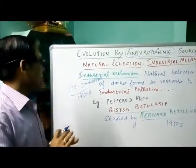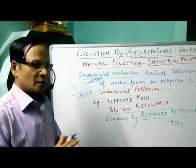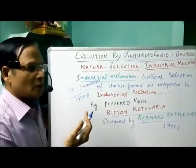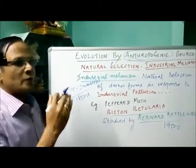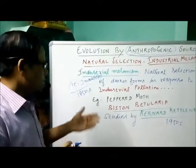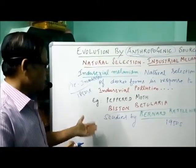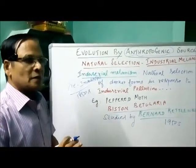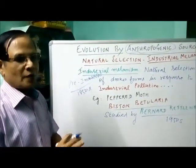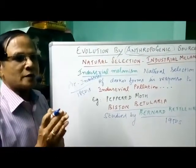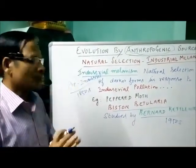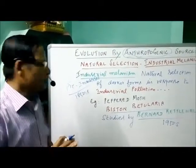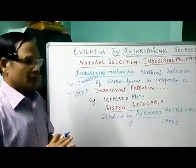During the pre-industrialization period, the white background of the walls of buildings favored the white moths, because they were not identified — they were not spotted by the birds. That is why white moths were more in number during the pre-industrialization period.